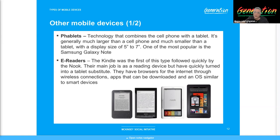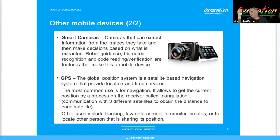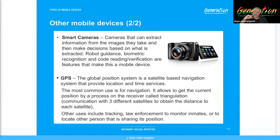Just remember: if it looks like a phone but it's bigger — around five and a half to seven inches — it's got to be a phablet. If it looks ridiculous in your hand, it's a phablet.